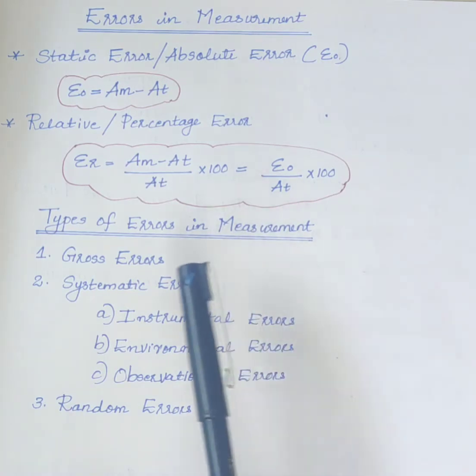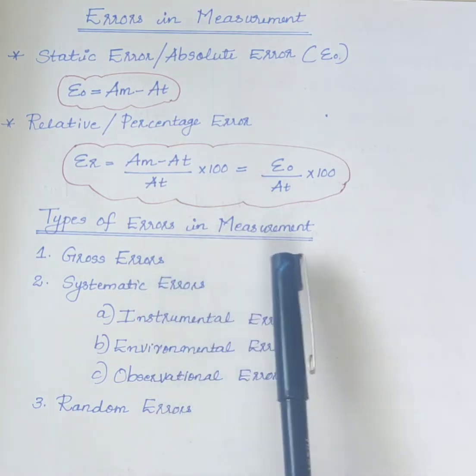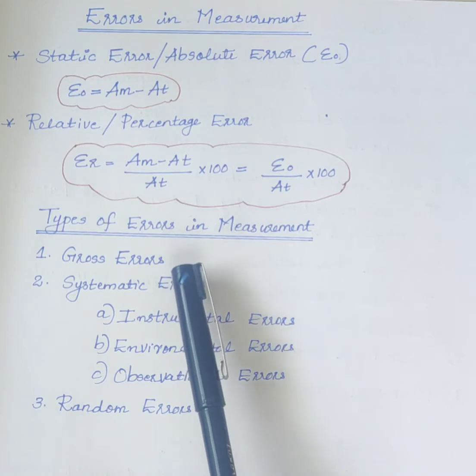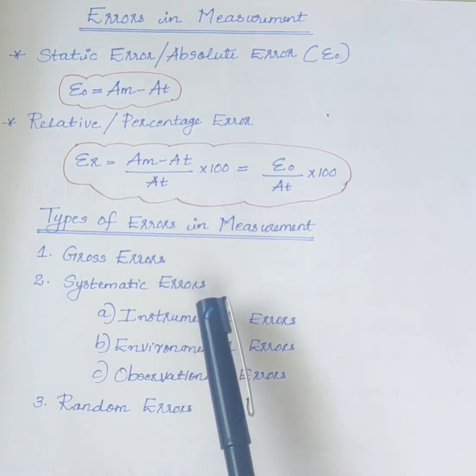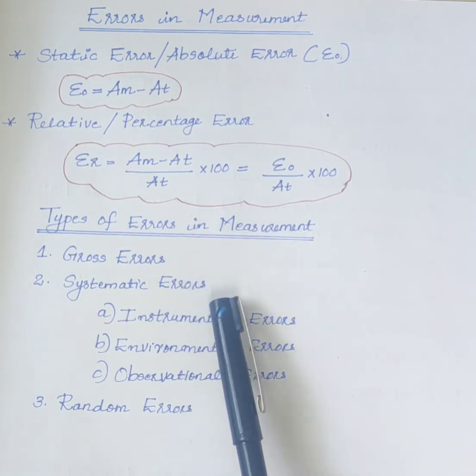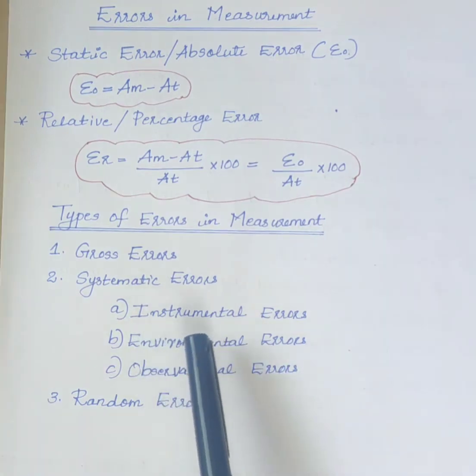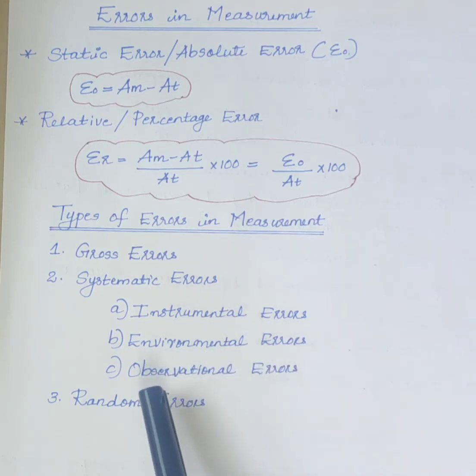Next we will discuss types of errors in measurement. First one is gross error. Second one is systematic errors. Systematic errors are mainly three types: instrumental errors, environmental errors, and observational errors. And third one is random errors.